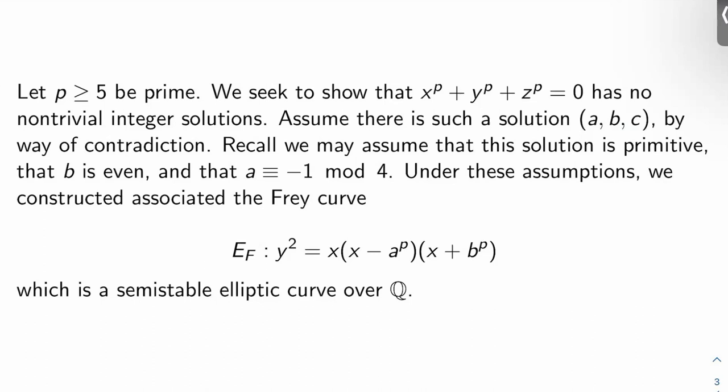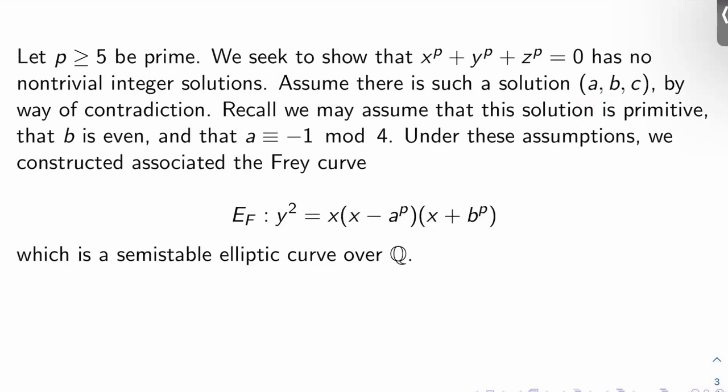Recall we can assume that this solution is primitive, meaning any two of the three entries are coprime. We can also assume that b is even and that a ≡ -1 mod 4. Also, under these assumptions, we constructed what we called the Frey curve E_F associated to the solution ABC, which is given by the equation y² = x(x - a^P)(x + b^P).